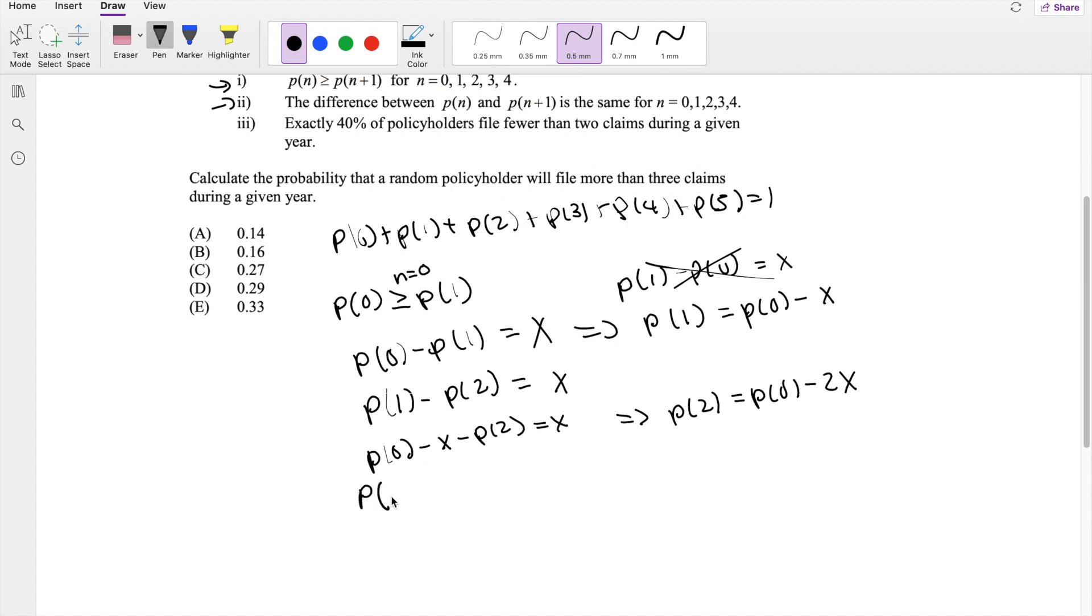And then we can also say the probability of 2 minus the probability of 3 must be equal to x. So plugging in 2 here, probability of 0 minus 2x minus probability of 3 is equal to x. So then likewise, we can say that this is equal to probability of 3 is equal to probability of 0 minus 3x. I bet you can kind of see the pattern. You can guess the probability of 4 is going to be equal to probability of 0 minus 4x, and then the probability of 5 is going to be probability of 0 minus 5x.